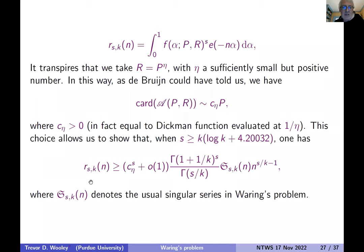So think of s as being at least as large as the number of variables we need in Waring's problem now. So we're interested in representing integer n. p is going to be n to the 1 over k. And by orthogonality, this integral here counts the number of representations of n as the sum of s k-th powers of smooth integers.